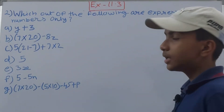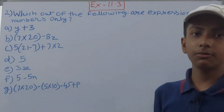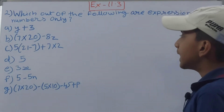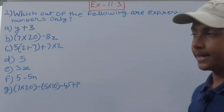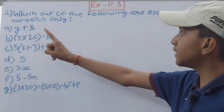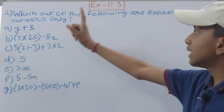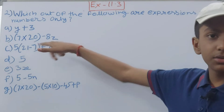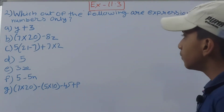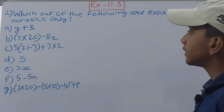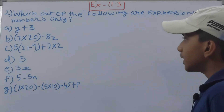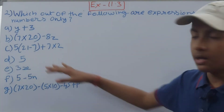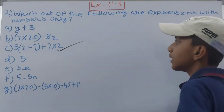The first one is y + 3. Now, y is a variable, so we are not going to take this as an expression with numbers only. The next one is 7 × (20) − 8z. This z is also a variable, so move on. Next: 5(21 − 7) + 7 × 2. If you see here, no variables are there, so this expression is an expression which has only numbers.